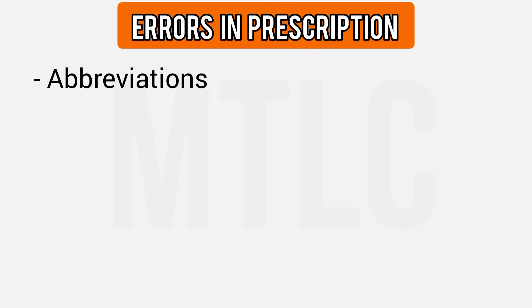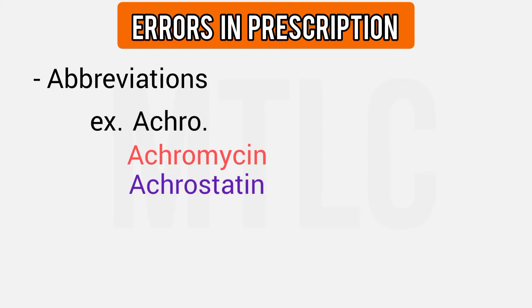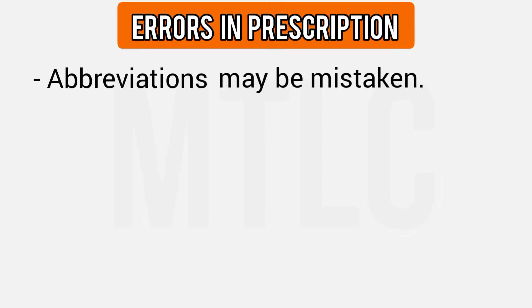One source of error is abbreviation — when physicians use short forms. For example, a drug with 'acro' in the name could be acromycin or acrostatin. If an abbreviation or short form is used in the prescription, and you don't know how to dispense that drug, you have to ask the physician and only then dispense to the patient.